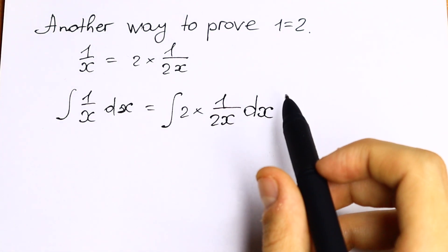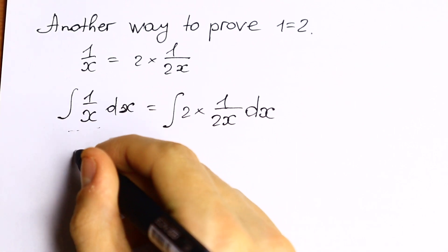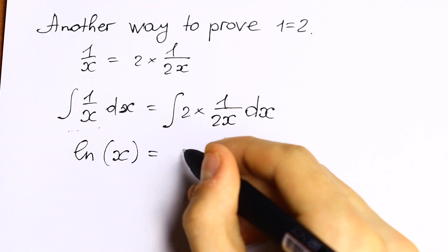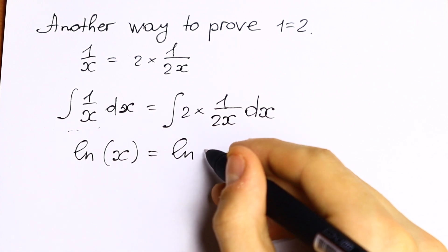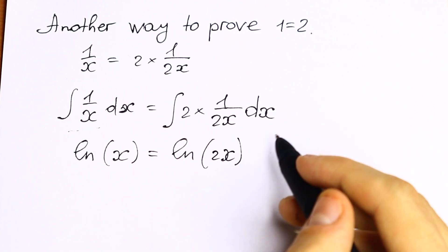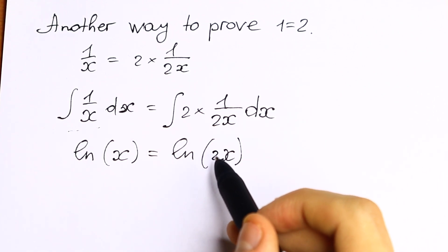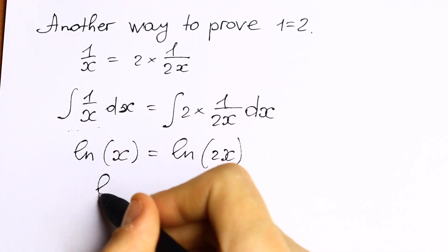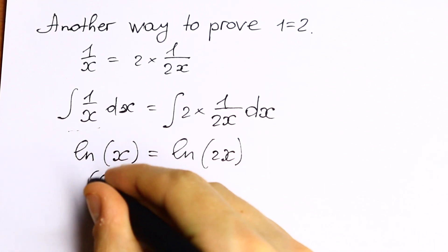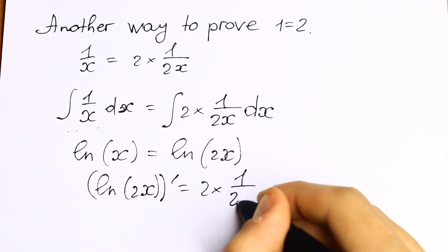We can now perform the integration. This is a classic natural log, so natural log of x equals natural log of 2x. Notice that we have used the differential chain rule to find the proper anti-derivative, since the derivative of natural log of 2x equals 2 times 1 over 2x.